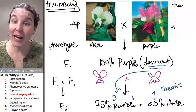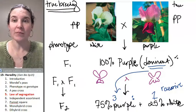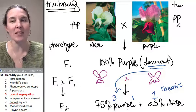Now, take a look at the dominant purple. This also has to be true breeding. It has to be homozygous. This time it has to be homozygous dominant.